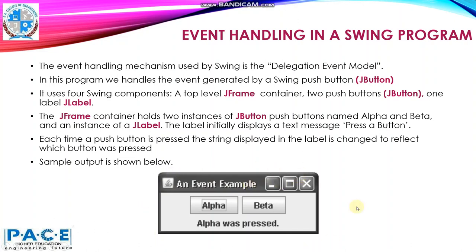In this container, we will be adding 3 Swing controls: 2 push buttons, alpha and beta, and one label. The label will initialize with 'press a button.' And when a button is pressed, an action event will be generated. In this program, we will be handling that event.